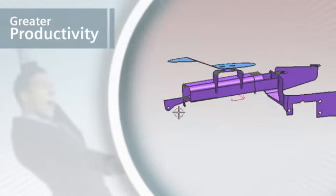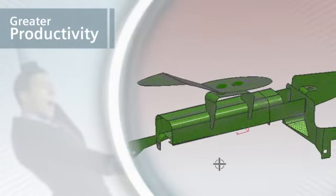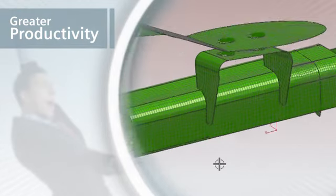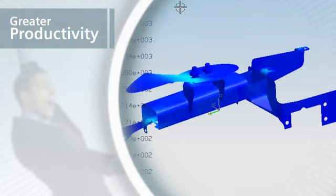An FEA analysis of how the new design will perform is required. The associative connection to other applications is maintained, so parameters such as loads, restraints, and materials are remembered. A quick view of the FEA study shows an acceptable part.